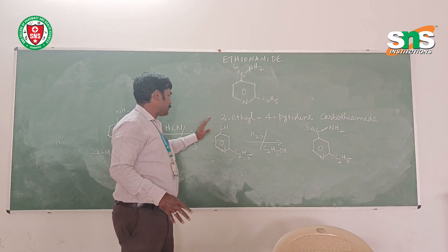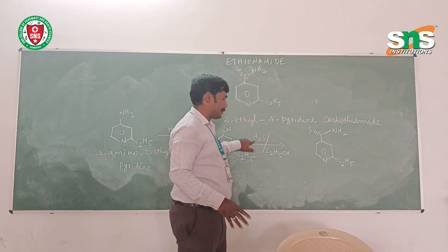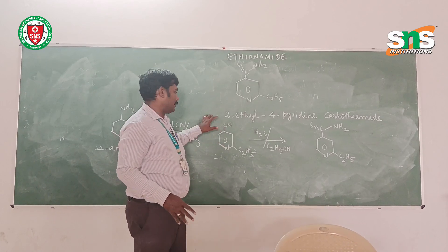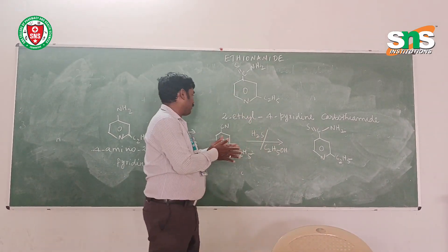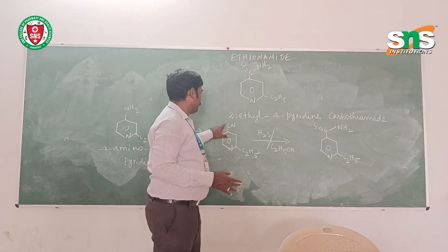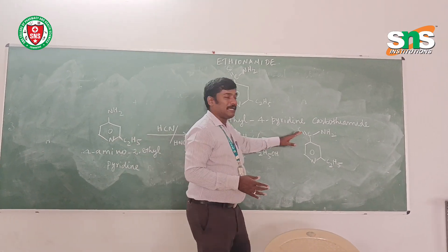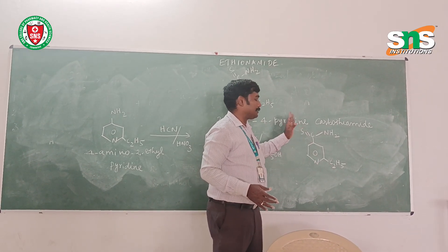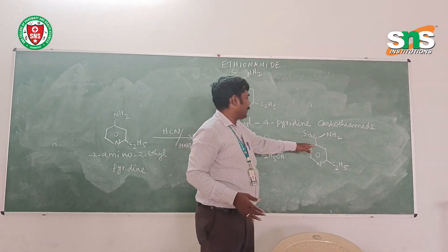This 4-cyano-2-ethylpyridine is further treated with hydrogen sulfide (H2S) in the presence of ethanol. In this reaction, the CN group is converted: sulphur is added to the carbon giving C=S, and the hydrogen is added to the nitrogen giving NH2. This C=S and NH2 together constitute the thiamide group. So the final product is 2-ethyl-4-pyridine carbothiamide — that is, ethionamide.